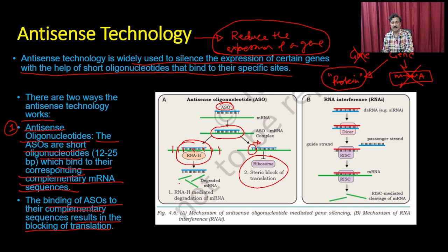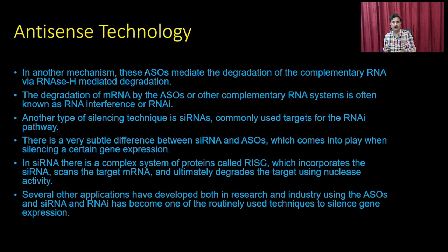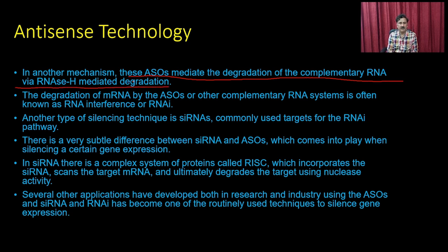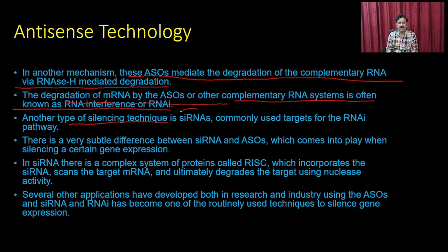The second approach is called RNA interference. In this mechanism, oligonucleotides mediate the degradation of complementary RNA via RNase H-mediated degradation. The degradation of messenger RNA by antisense oligonucleotides or other complementary RNA systems is known as RNA interference. Another type of silencing technique uses siRNAs, commonly used for targeting the RNA pathway.